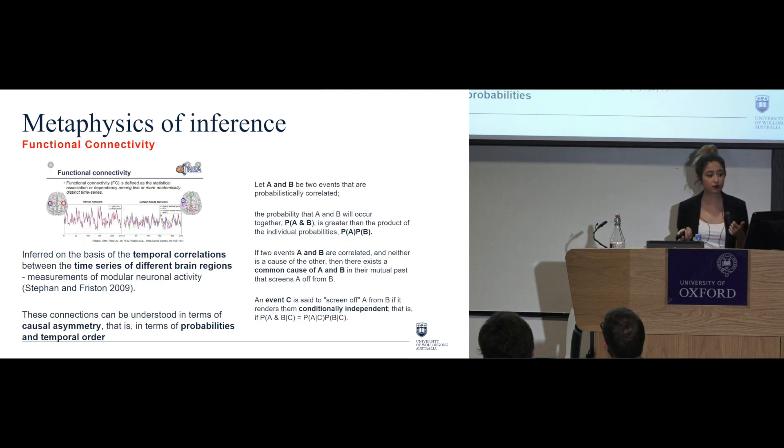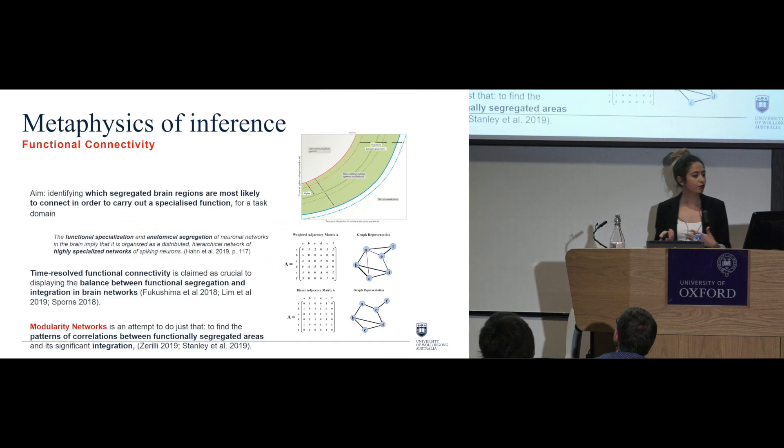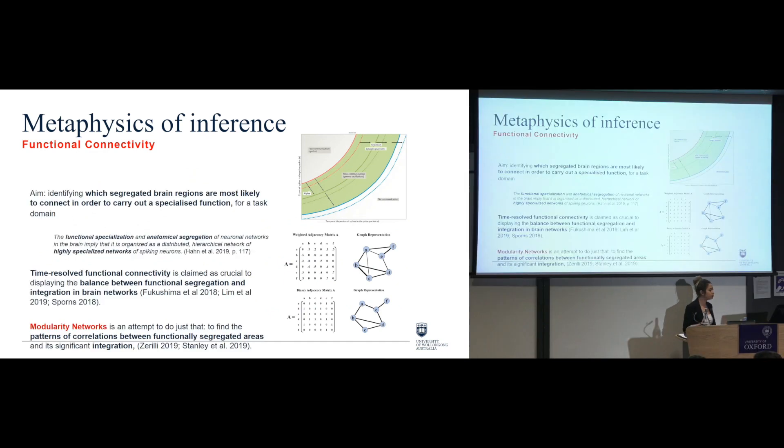Okay, so let me start by looking at functional connectivity, just the very basics. The aim is that it is inferred on the basis of temporal correlations between time series of different brain regions in a sort of measurements of this modular neural activity. These connections can then be understood in terms of this causal asymmetry, that is in terms of these probabilities and temporal order. So the aim here and what is more important is that the aim is to identify which are the segregated brain regions that are most likely to connect in order to carry on a specialized kind of function or for a task domain.